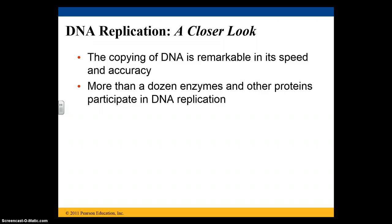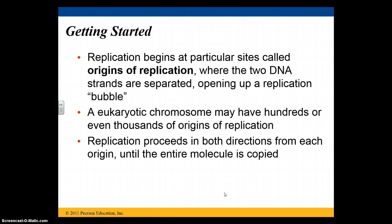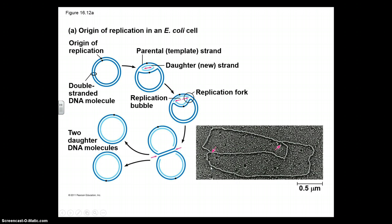The copying of DNA is pretty remarkable — it happens very quickly and is a very accurate process. It requires more than a dozen enzymes and multiple proteins. Replication begins at a particular site called the origin of replication. Two DNA strands are separated at the origin of replication, which opens up a replication bubble. A eukaryotic chromosome may have hundreds or thousands of origins of replication because of all the multiple chromosomes within that cell. Replication proceeds in both directions from each origin until the entire molecule is copied.